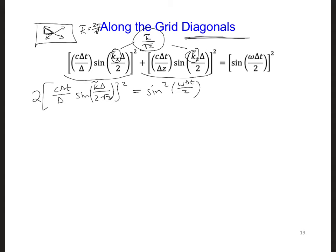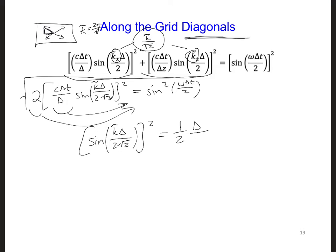So then we can move the two coefficients, 2 and this, over to the right side. And then we can also take the square root of the entire equation. So first if we move those coefficients to the right side, at the moment this is still squared, we're going to get 1 half delta over c delta t squared and sine squared.